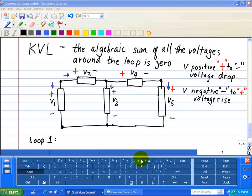Now we're going to apply and state the second of Kirchhoff Circuit Laws, and that is based on the principle of conservation of energy. And here I abbreviated KVL, or Kirchhoff Voltage Law, stating that the algebraic sum of all the voltages around the loop is zero.